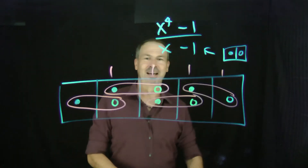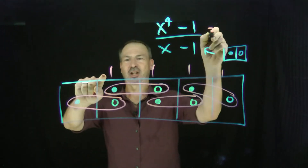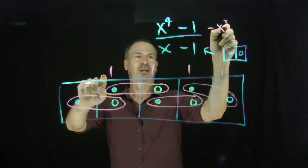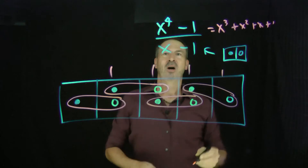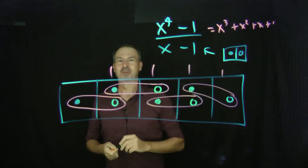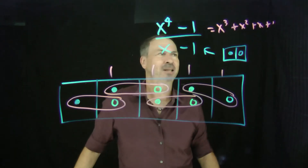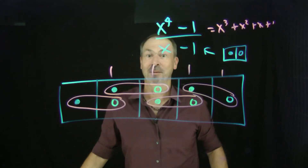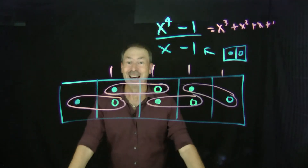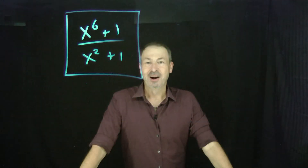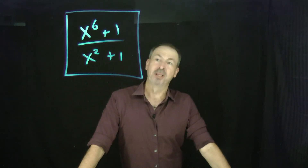Finally, I really lucked out — there's another copy of what I want: one dot next to an anti-dot. So I can see the answer is actually an x³ with an x² and an x and a one. x⁴ - 1 over x - 1 is x³ + x² + x + 1. Great! Let's do another example.